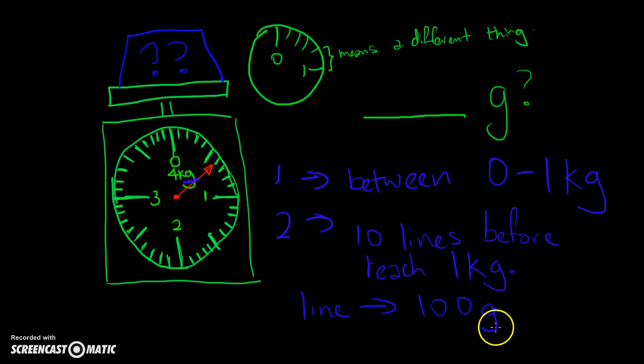Why 100 grams? It's because if I have 100 multiplied by that 10 lines, it gives me 1,000 grams. I'll say again, 1 line gives me 100 grams. Because 10 of these lines give me actually 1,000 grams, which equals 1 kg. So from here to here, I know it's 1 kg.